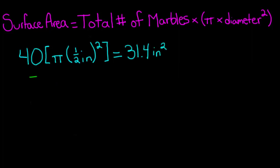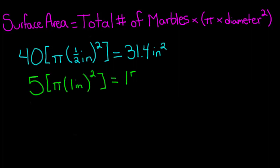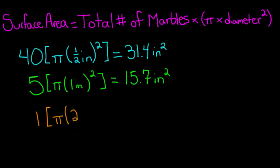At the second station, we multiply five marbles by the product of pi times one inch squared, which gives us a surface area of 15.7 square inches. At the third station, we multiply the one marble times the product of pi times two inches squared, which gives us a surface area of 12.6 square inches.